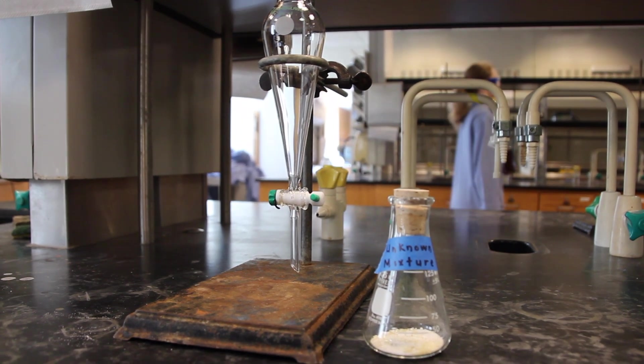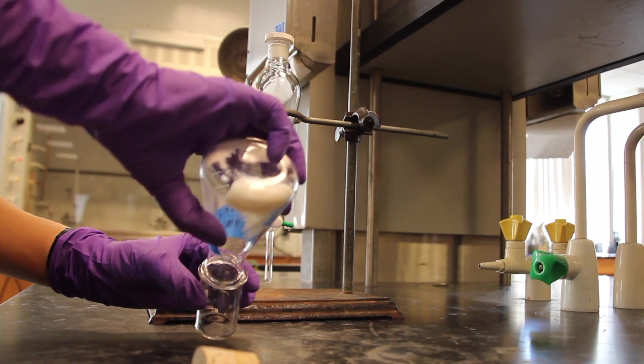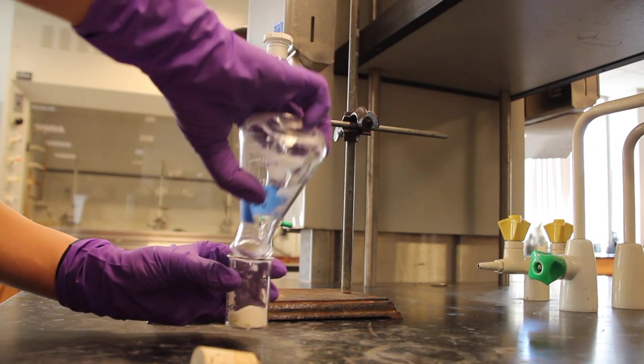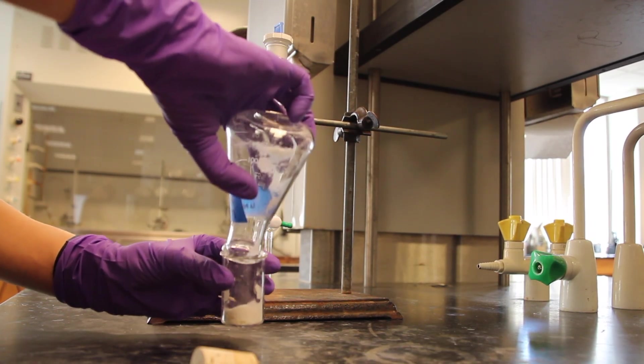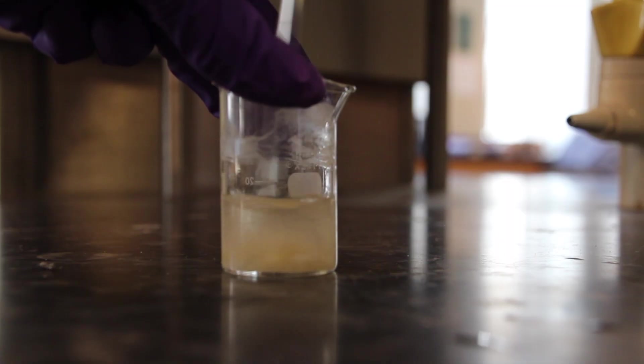You will be given a well-mixed sample of the mixture that you are to separate. It will consist of one gram each of two unknown compounds. Place this mixture in a large test tube and add 15 to 20 milliliters of diethyl ether. Stir the mixture to dissolve as much solid as possible.